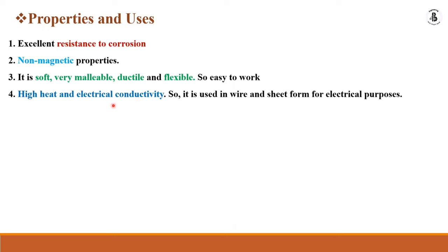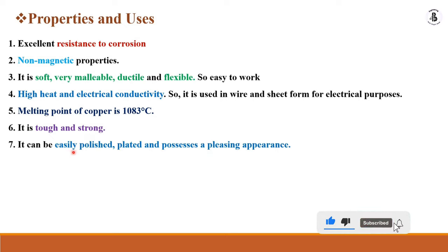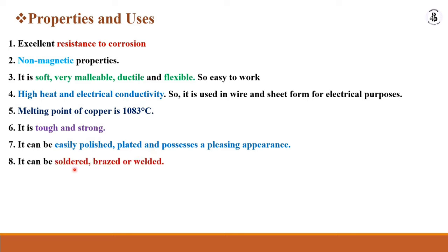Copper has high heat and electrical conductivity, so it is used in wire and sheet form for electrical purposes. The melting point of copper is above 1000 degrees centigrade — approximately 1083 degrees centigrade. It is tough and strong, so in the jewellery industry copper is added into gold for providing strengthening to jewellery components. It can be easily polished, plated, and possesses a pleasant appearance. It can be soldered, brazed or welded.